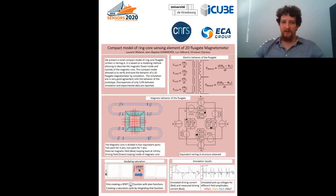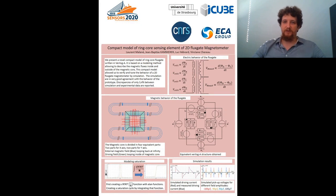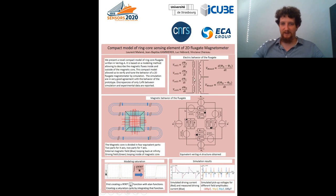We also need to model the electrical behavior of the fluxgate. Since we know that the voltage across a coil is proportional to the derivative of the flux flowing through it, we can just apply the relation as it is. Since our driving coil is divided into four parts, it is divided into four parts here as well. And we have a pickup coil here and here that is obtained here and here.